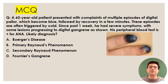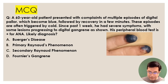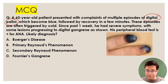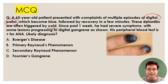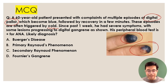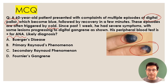Let us start with an MCQ. There is a 60-year-old patient who presented with multiple episodes of digital pallor — pallor happening, then they became blue, followed by recovery happening in a few minutes. These episodes are often triggered by cold. Since past one week he had severe symptoms that did not resolve, and some progressed to gangrene. His peripheral blood test is positive for anti-nuclear antibody. What is the likely diagnosis?